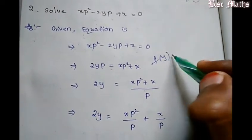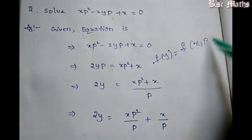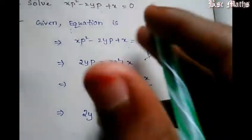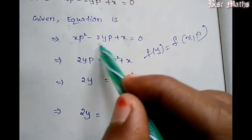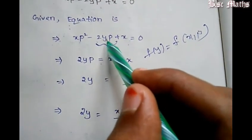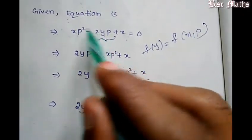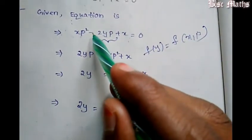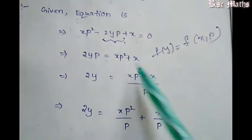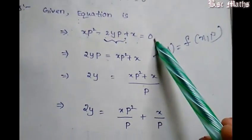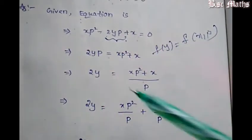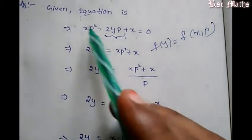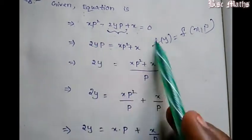The given equation is xp squared minus 2yp plus x equals 0. We have F of y equal to F of x, p — equations solvable for y. We solve for 2yp: 2yp equals xp squared plus x, so 2y equals xp plus x by p.